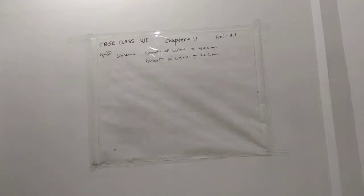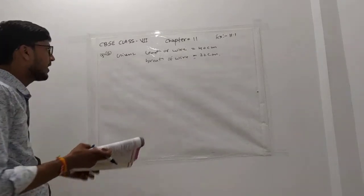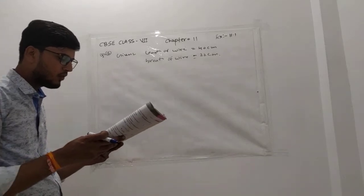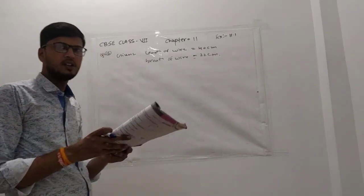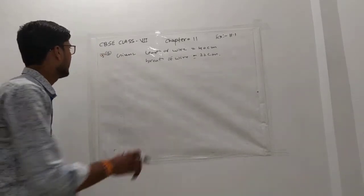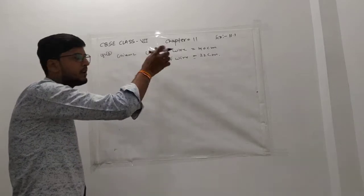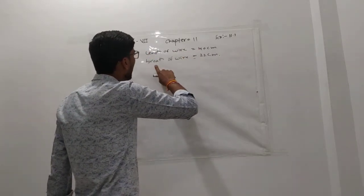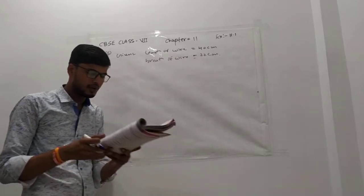In question number 6, a wire is in the shape of a rectangle. The length is 40 cm and the width is 22 cm.